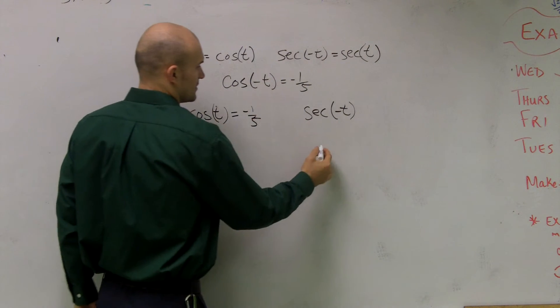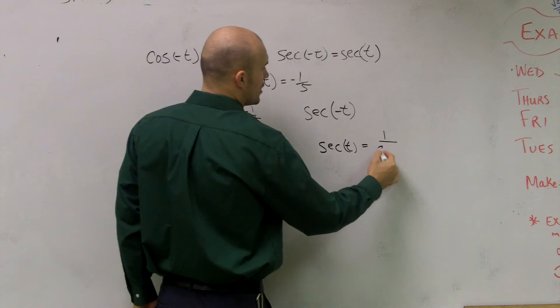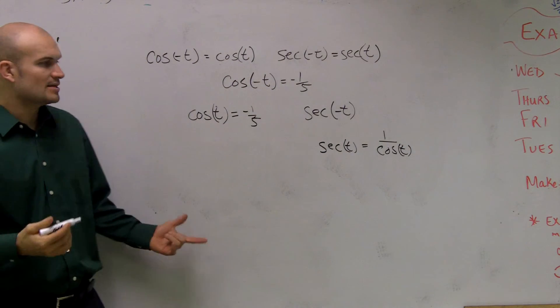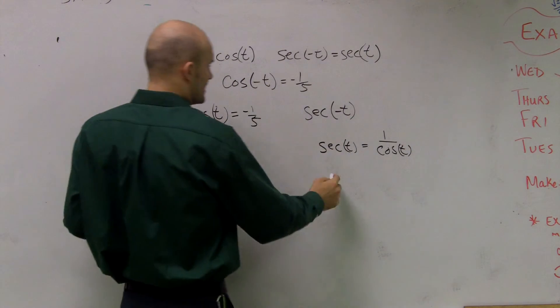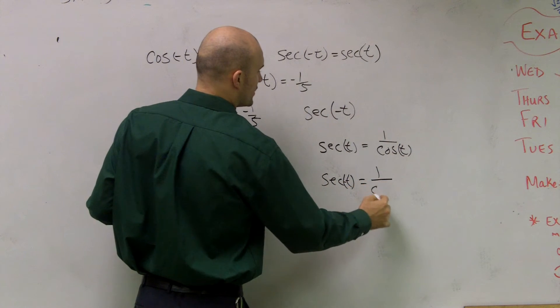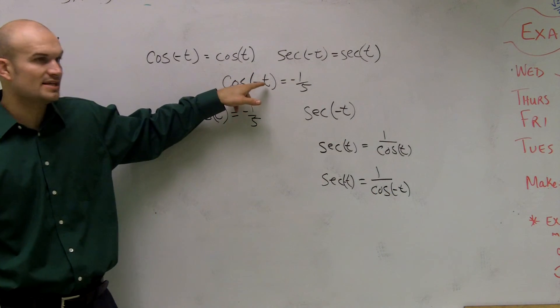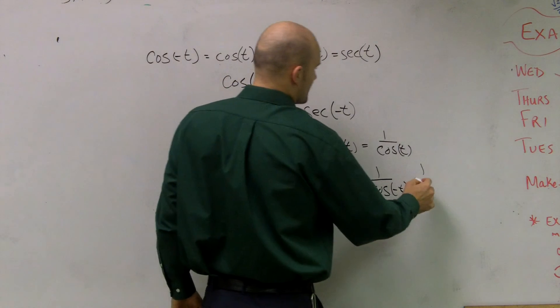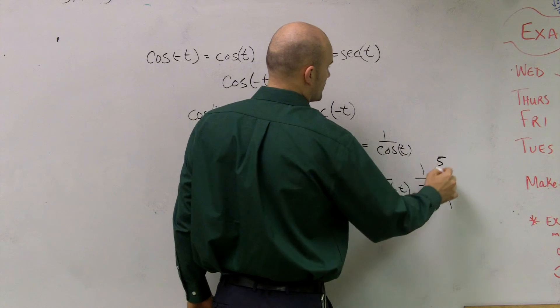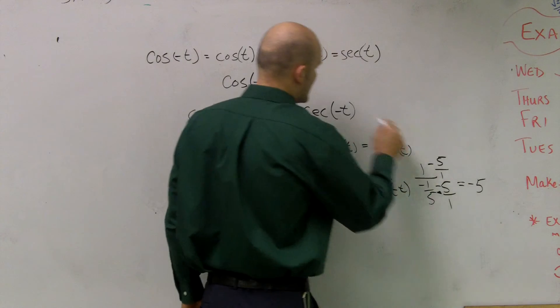secant of t is equal to 1 over cosine of t. Well, that's going to be the same thing for secant of negative t is equal to 1 over cosine of negative t. So the cosine of negative t is negative 1 fifth. So I have 1 over a negative 1 fifth multiplied by a reciprocal. And what you get is negative 5.